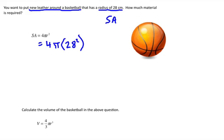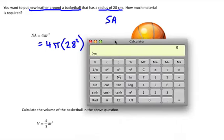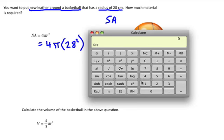When you do this on your calculator, you have to make sure that you input this correctly. So it's going to be 4 times π times 28 squared, and you have to do the squared first and then press equals.